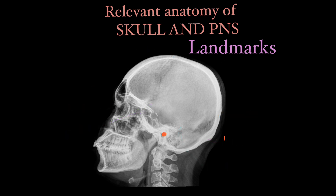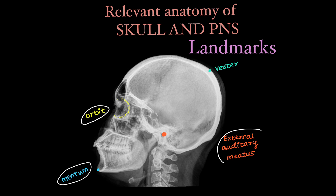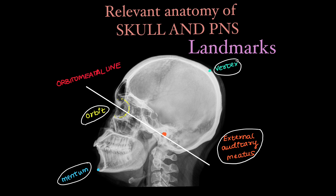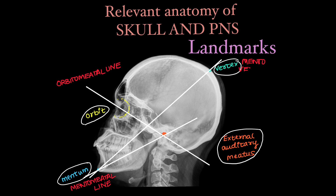We have a set of standard lines along which the x-ray beam has to be oriented in CT or x-ray. We have the external auditory meatus or the external ear, the orbit, the vertex and mentum of the mandible. Using these standard points we draw lines like orbitomeatal line, mentomeatal line, and the mental vertical line and so on.